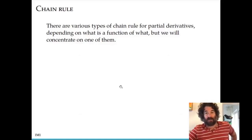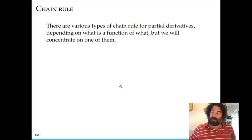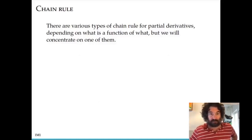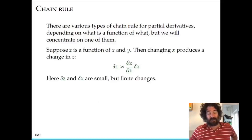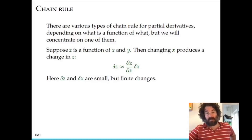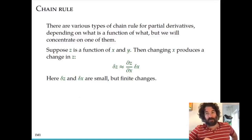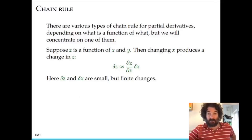They can all be unified, but we're just going to look at one particular case here. Later in another course you'll learn about more general cases. So the case we'll look at: we have a function z, and we'll assume it's a function of two variables x and y. For the chain rule later on we'll consider that x and y are functions of another variable t, but for the moment we'll just think of this function z of x and y.